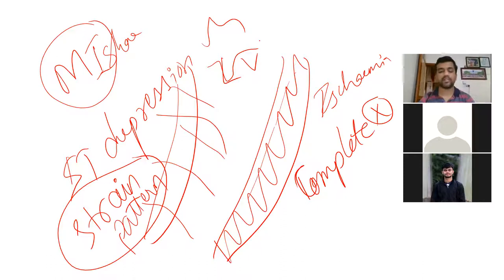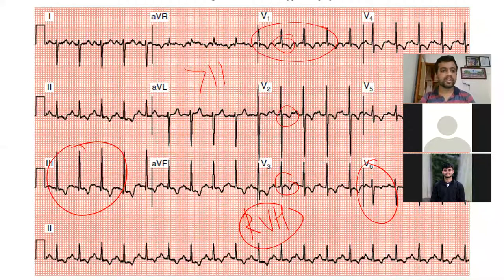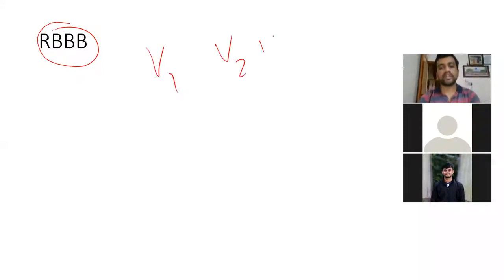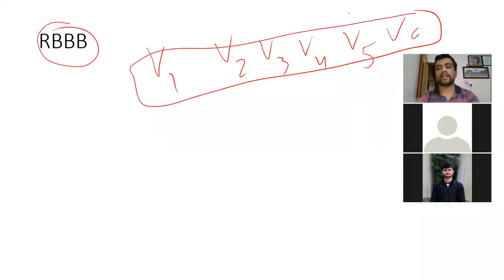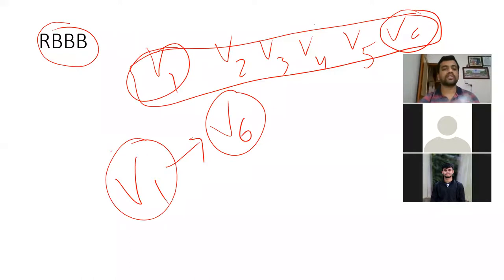We'll discuss STEMI and NSTEMI tomorrow. Now, moving on to bundle branch blocks — RBBB and LBBB. Previously, when this was explained in detail, students got confused with the mechanism. Since exams are coming soon, we'll focus on the key findings in RBBB and LBBB without getting into why the waveforms form that way. We'll look at only V1 through V6, and specifically focus on V1 and V6.